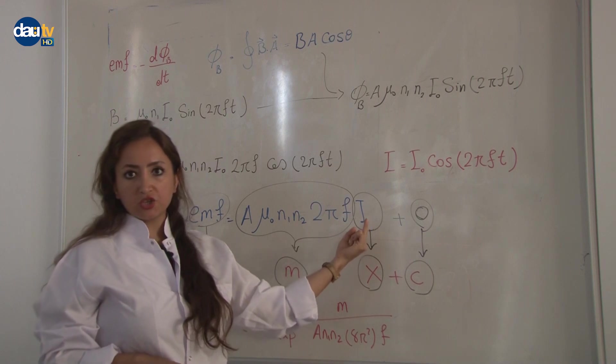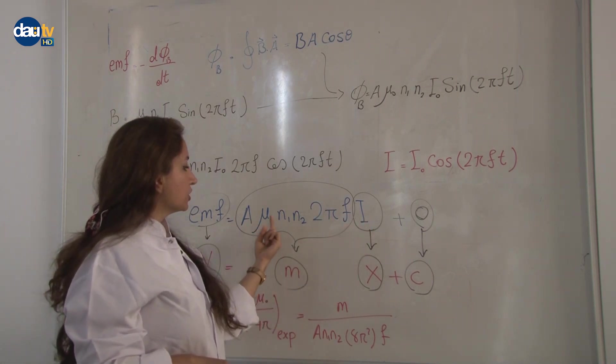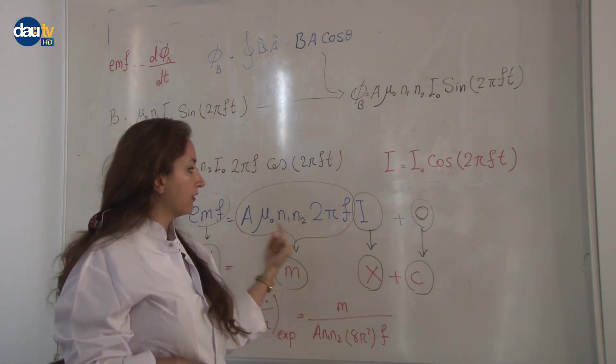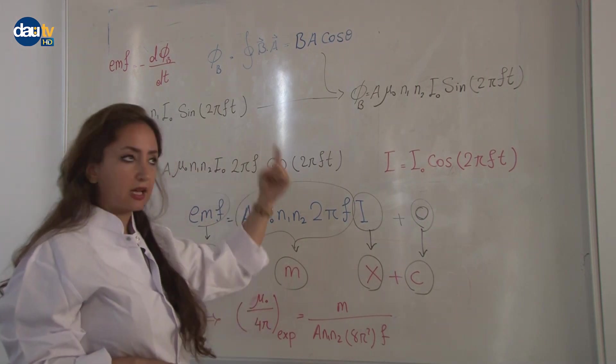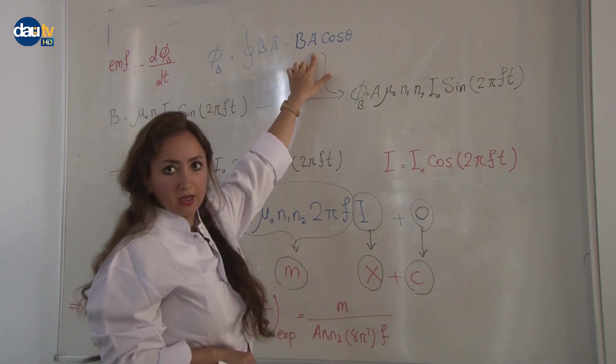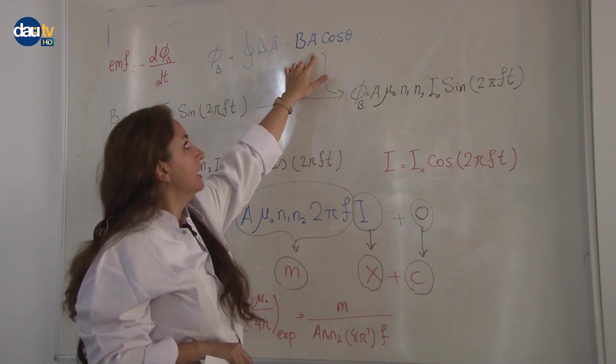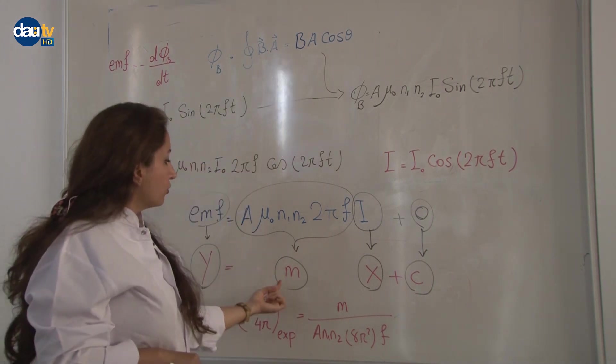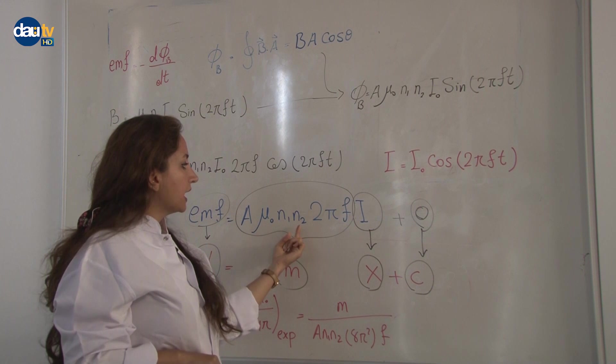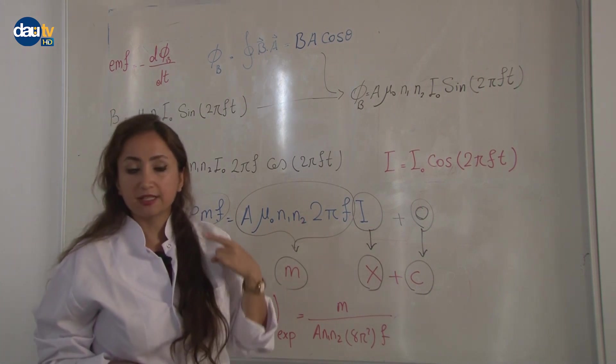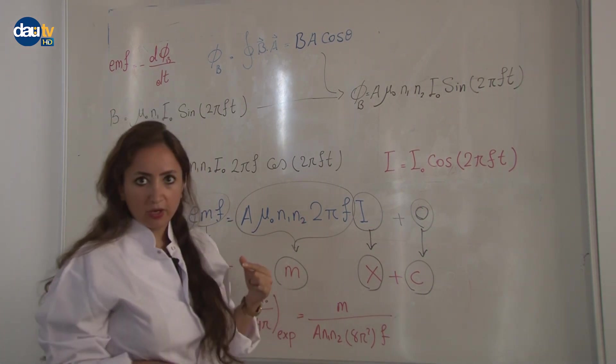If we suppose, because in this experiment we are varying current to define EMF, it means that the role of current here is the same as x, is our variation, to define EMF as y. The coefficient of our variation, which is A mu zero N1 N2 2 pi f, A is area, is equal to our slope.